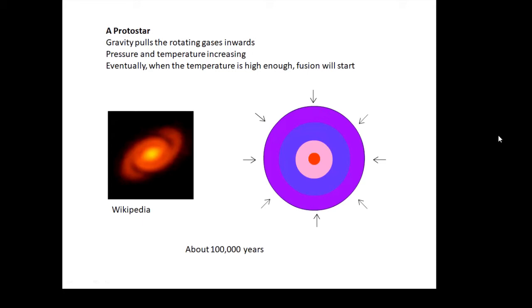Pressure in the protostar is getting bigger and bigger, temperature is getting bigger and bigger, it's getting hotter and hotter. And eventually when it's hot enough, then nuclear fusion will start and the star will switch on and it will become a main sequence star.